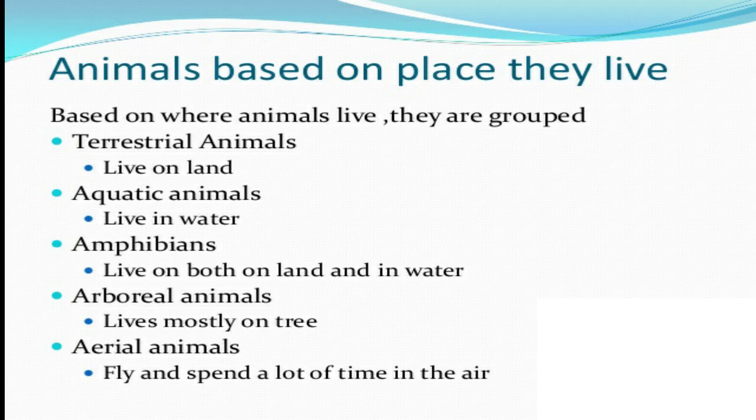Amphibians are the animals that live both on land and in water, like a frog. You might have seen that frogs are able to live in water and also on land. Frog, toads, salamanders – these are some examples of amphibians, that is, they live both on land and in water.